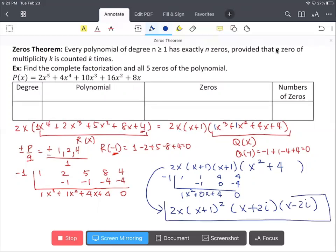Then we've factored p of x completely. Now looking at p of x, we can tell that the degree is 5. The polynomial is 2x to the fifth plus 4x to the fourth plus 10x cubed plus 16x squared plus 8x. And x equals 0 is a zero of multiplicity m equals 1.